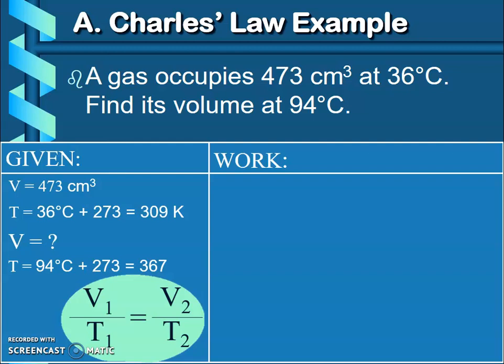I'm just going to plug my numbers in. In V1 I'm going to put 473, in T1 I'm going to put that 309 K. V2 I'm going to put an X or a question mark, and T2 I'm going to put that 367 K.